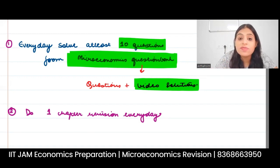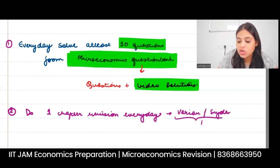If reading is difficult for you, then only from Varian or Snyder, any one book, do all graphs of that chapter.